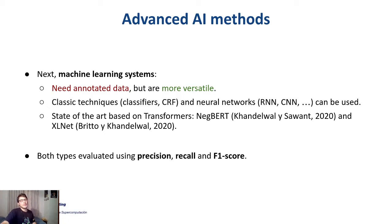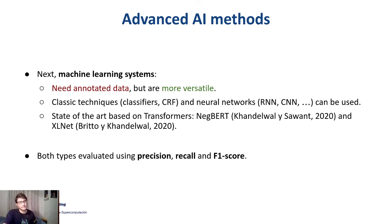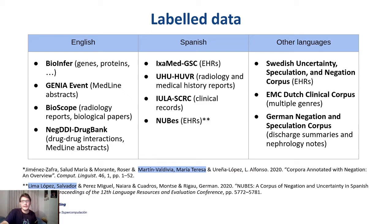Both rule-based systems and machine learning systems are evaluated using precision, recall, and F1 score. I should note that even rule-based systems need some annotated data to evaluate how well they perform. Here are some labeled corpora you may use if you want to train your own machine learning system.